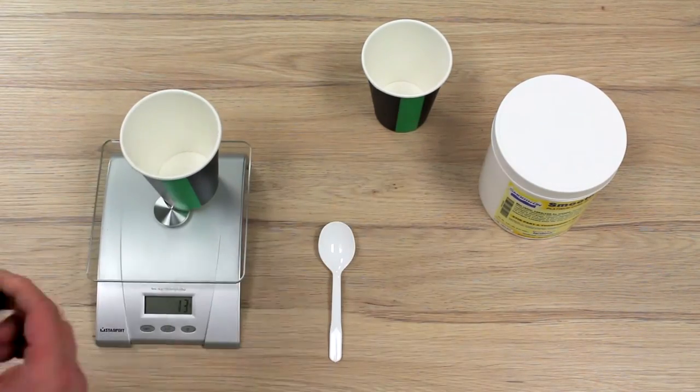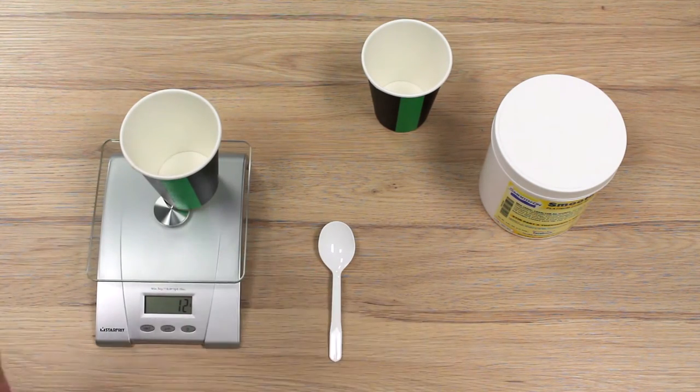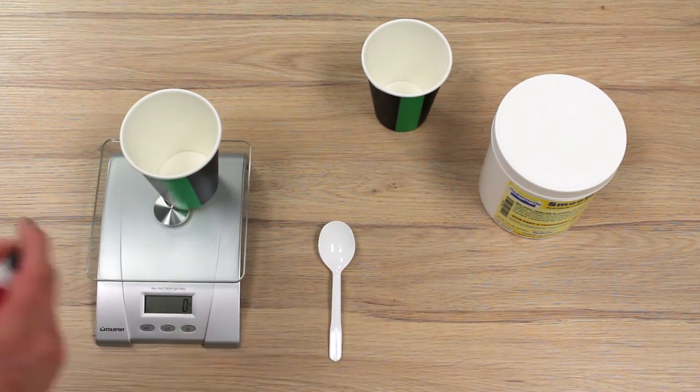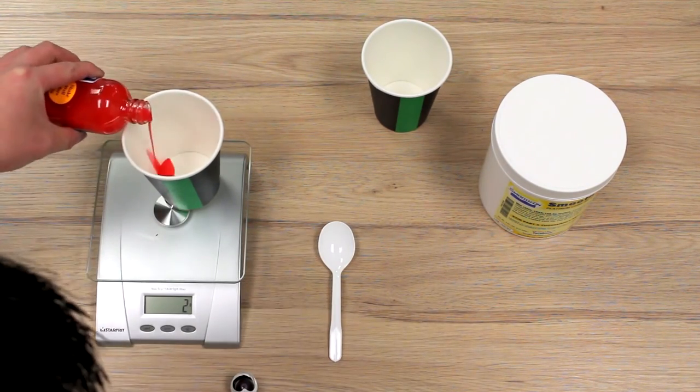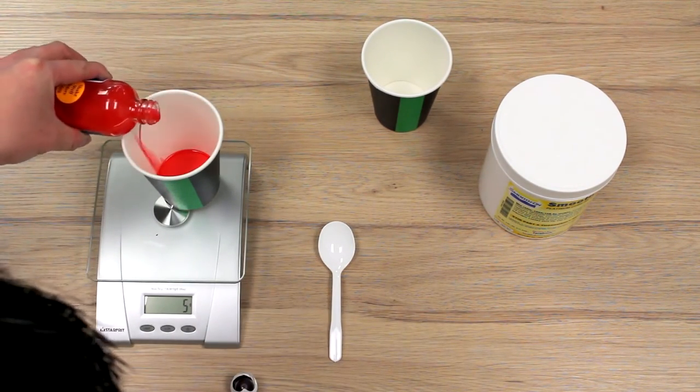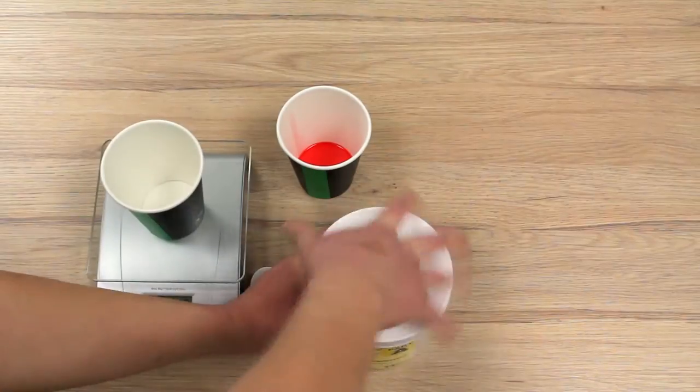Now we have to mix our silicone. We need 7g of the part A silicone mixture and 70g of the part B silicone mixture. You will need to have the exact measurements of both the mix to create the silicone mold. You can adjust the values to suit your needs.